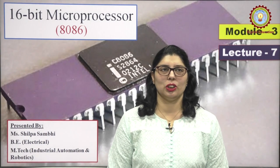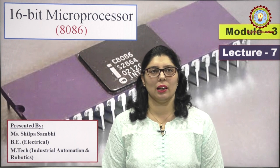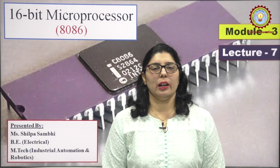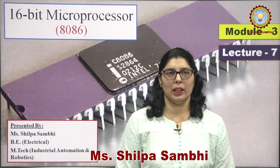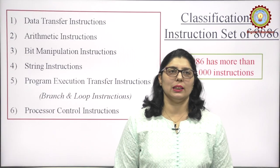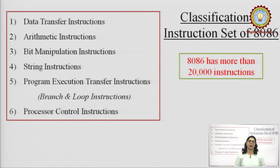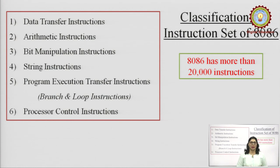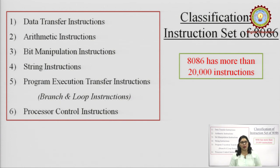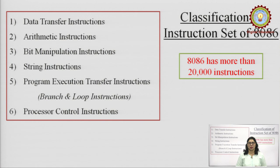Hello friends and welcome to the next lecture of module 3 on 16-bit microprocessor 8086. I am Shilpa Sambhi and today we will be talking on the instruction set of 8086 microprocessor. The 8086 has more than 20,000 instructions, which means more flexibility for programming. The full instruction set of 8086 is divided into 6 categories: data transfer instructions, arithmetic instructions, bit manipulation instructions, string instructions, program execution transfer, and processor control instructions. Let us understand each of these instruction sets one by one.